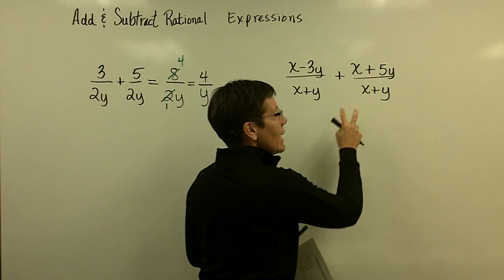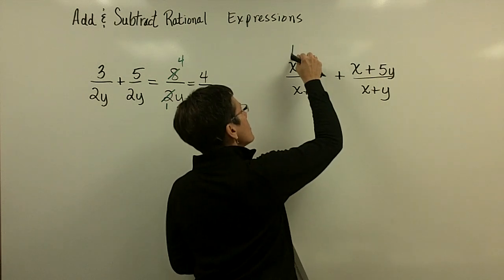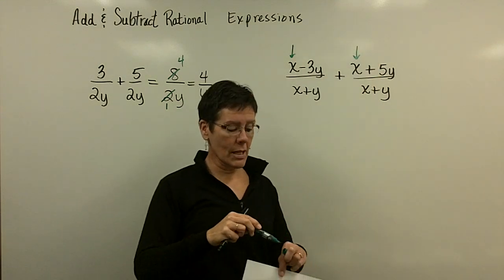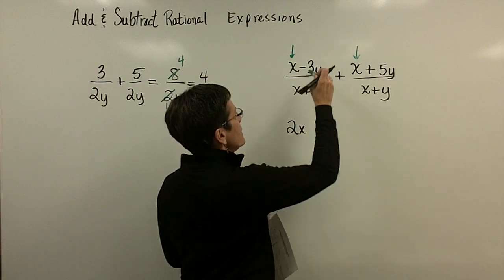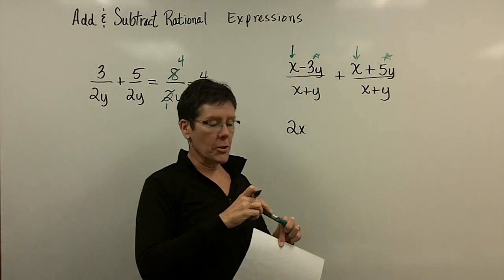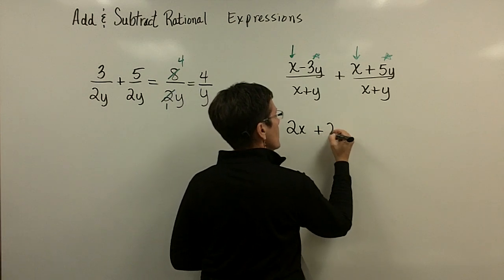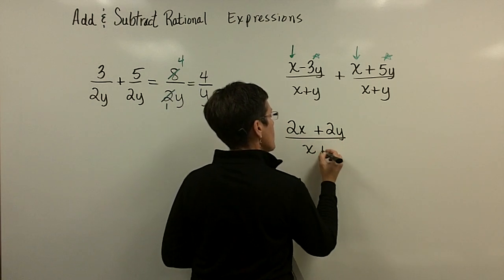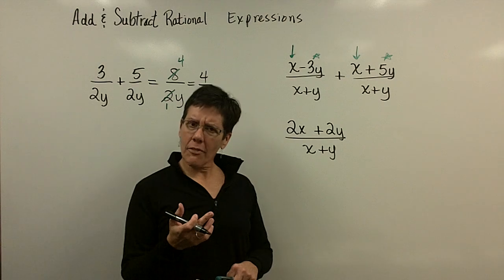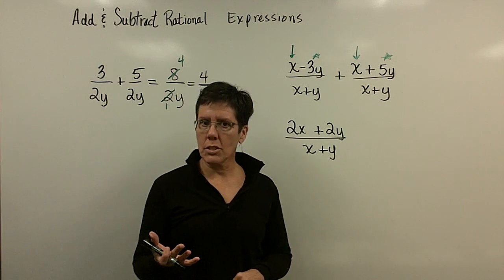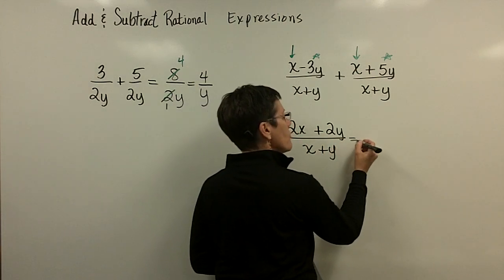These two fractions have a common denominator of x plus y, so I'm ready to add their numerators. This term and this term are like terms: 1x plus 1x is 2x. And then minus 3y and positive 5y are like terms that add to be positive 2y over the common denominator. But I have to look at that result and ask whether I can factor it at all to simplify. The numerator has a common factor of 2 in each term, so I need to factor that 2 out.